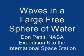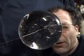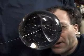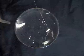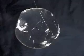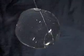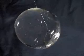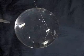Waves in a large free sphere of water. Here we have a large free sphere of water about the size of my head, 130 millimeters in diameter, and we put a puff of air — 10 cc's in 100 milliseconds — radially directed in from the side and look at the resulting waves. There's a combination of surface waves and body waves that go through this sphere.